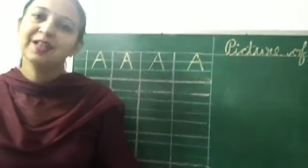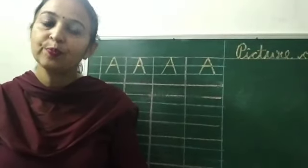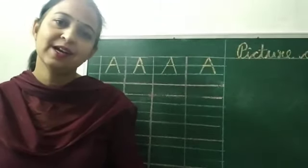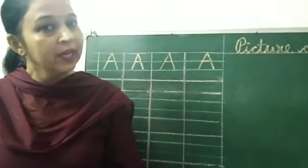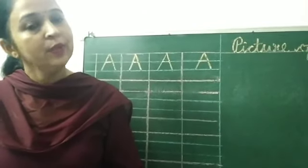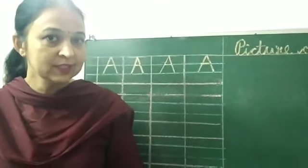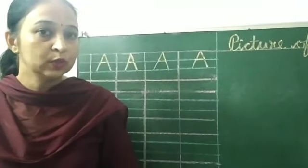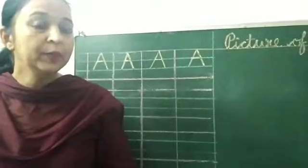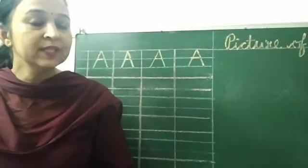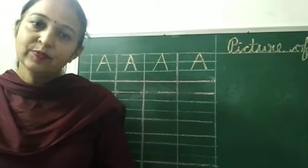Good morning, my dear students. How are you? I hope you all are good and safe at home. Welcome to your English written class. In today's class we will learn how to write letter A. We did in reading A for apple. Now we will draw the picture of A and apple. Are you ready? Go and bring your notebook, sharpened pencil, eraser, black sketch, and colors. Let's start.